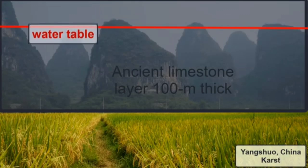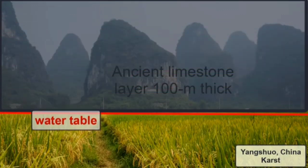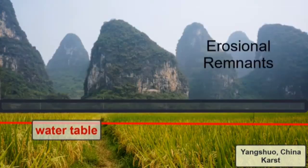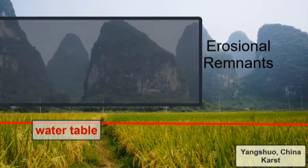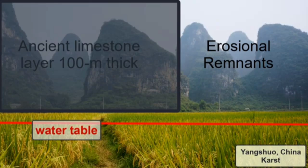When the water table has dropped completely and enough of the limestone has dissolved and all the cavern roofs have collapsed, the landscape takes on a different look. Steep-sided hills of limestone are scattered across the landscape as erosional remnants of the dissolution of the thick limestone layers that once blanketed the surface. Imagine this region was once a solid 100-meter thick layer of limestone, and now these hills are all that's left.